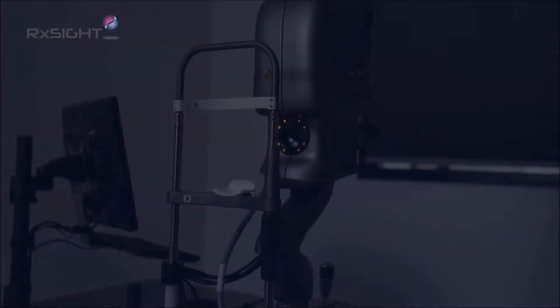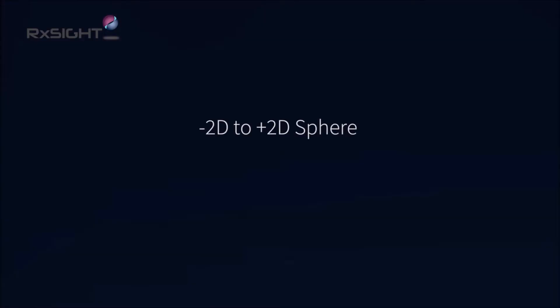Adjustment range of the RxLAL is from minus 2 to plus 2 diopters of sphere and from minus 0.5 to minus 3 diopters of cylinder.